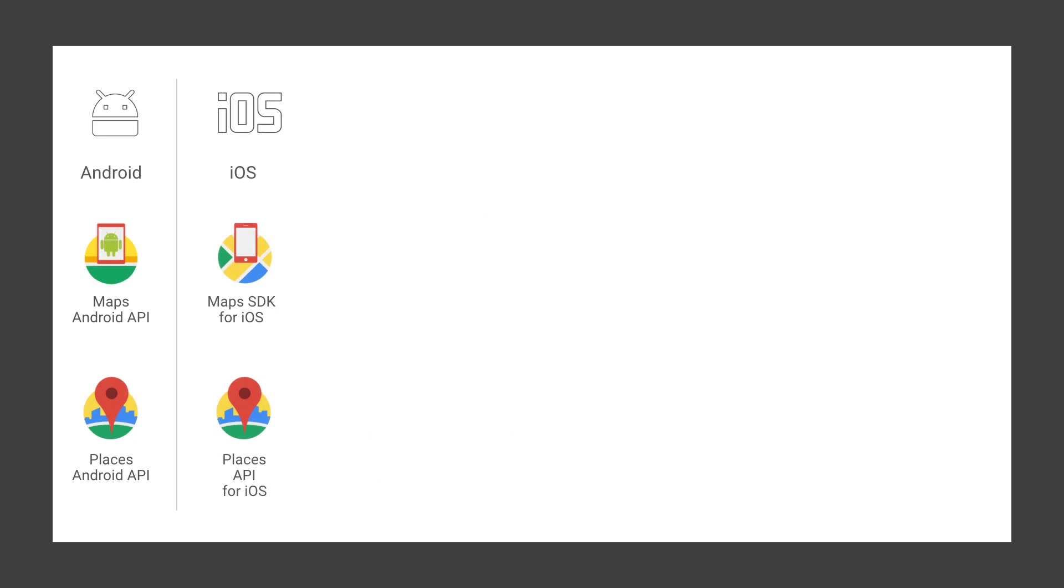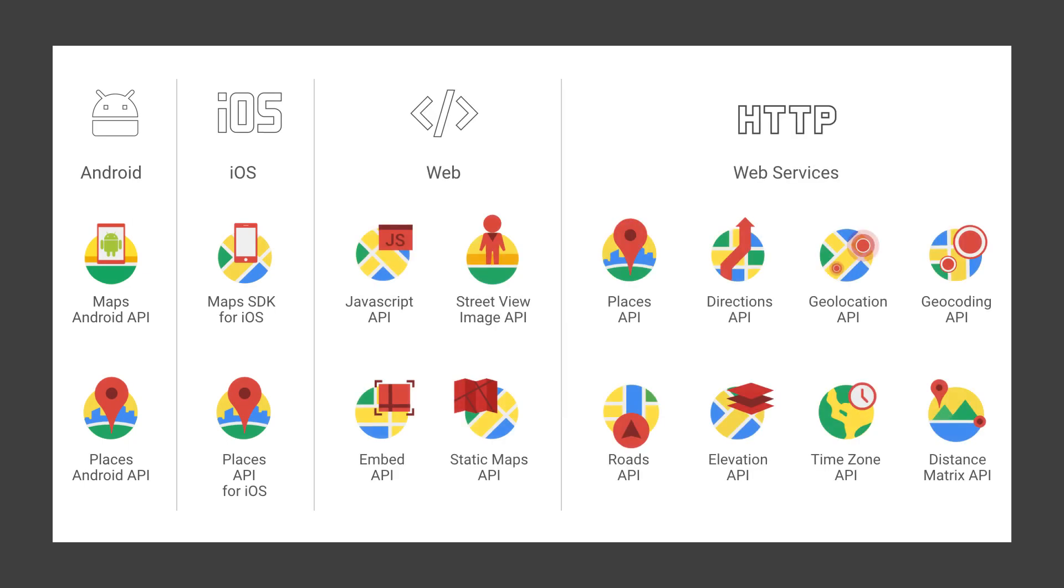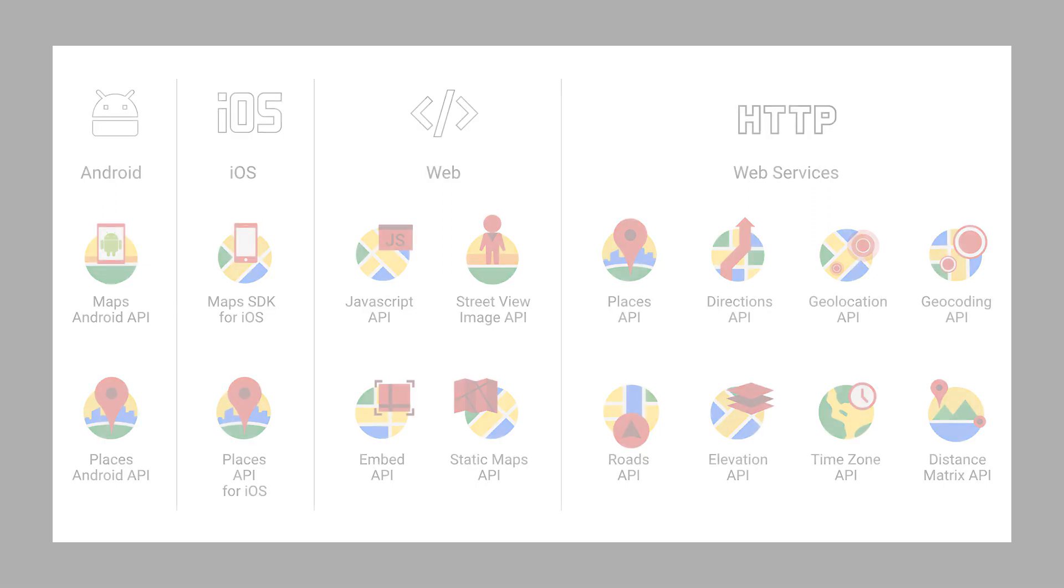Now, you can include those same features within your own apps using the Google Maps APIs, which are available on Android, iOS, web, and HTTP-based services. These APIs give you the power to do everything from visualizing points on a map to routing and planning for deliveries to pre-programming television remotes based on their physical location.